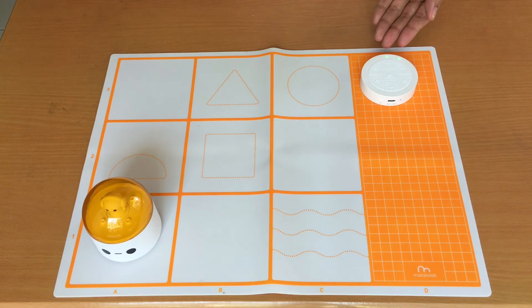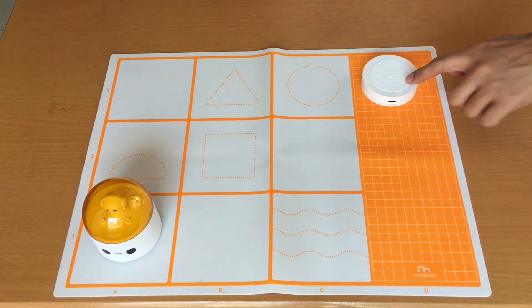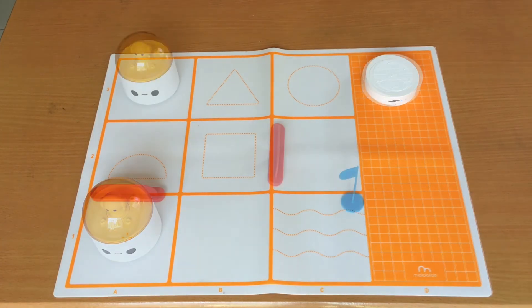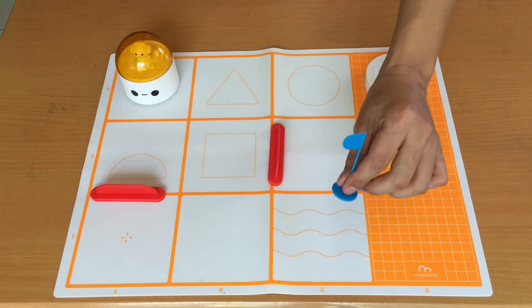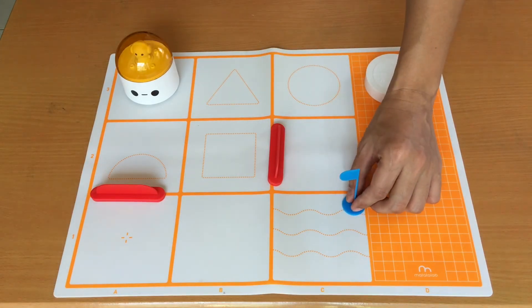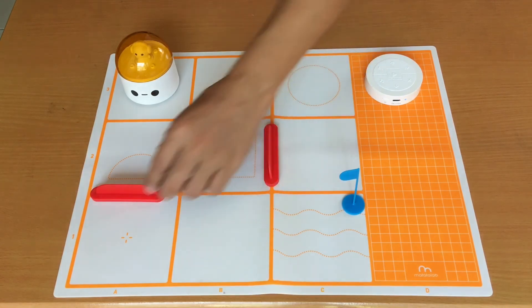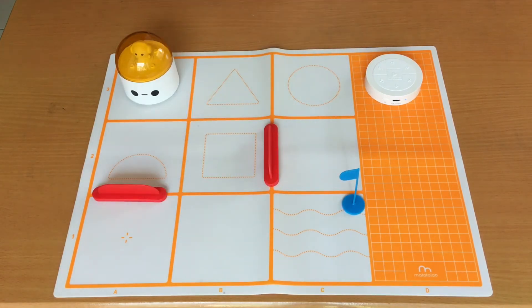To clear the commands, just press the clear button. Now let's try this challenge. What we want to do is have Matatabot move from its current location here to here. This is his goal. And I've placed some roadblocks, which means that Matatabot cannot go through it.